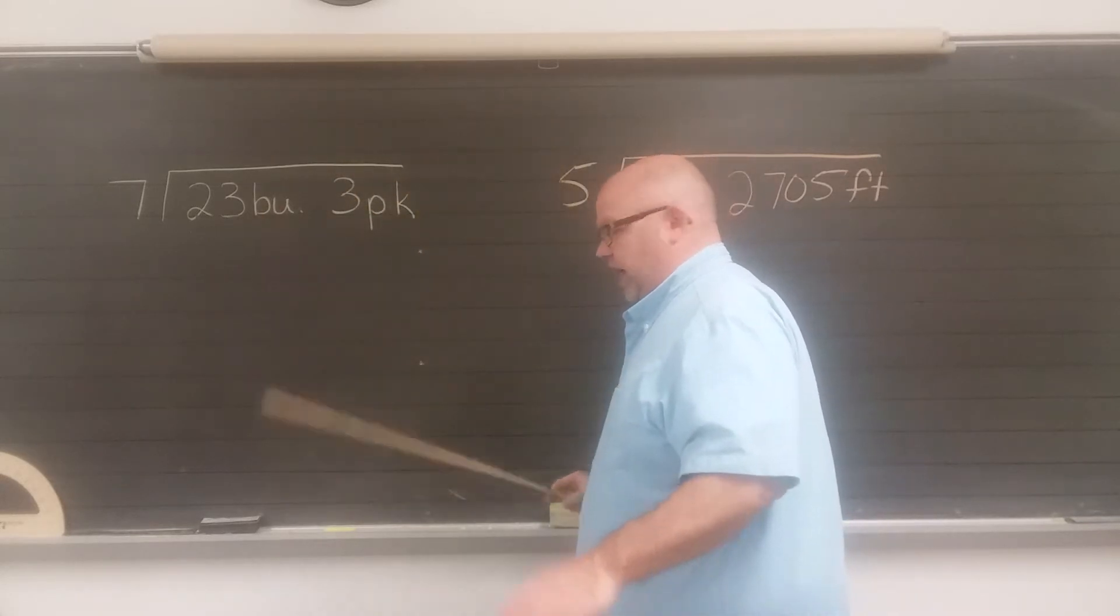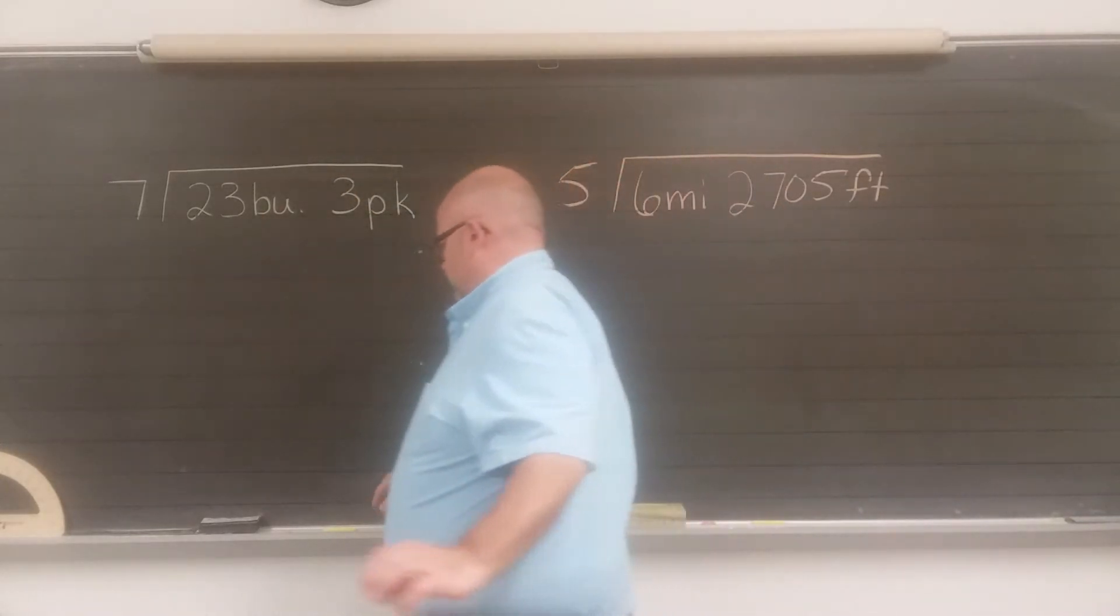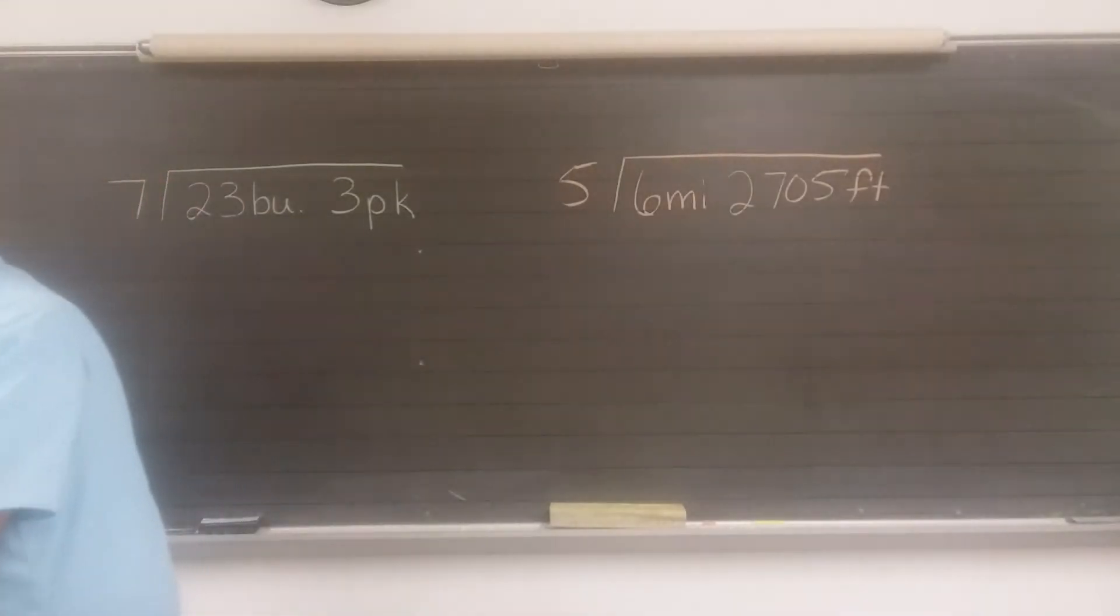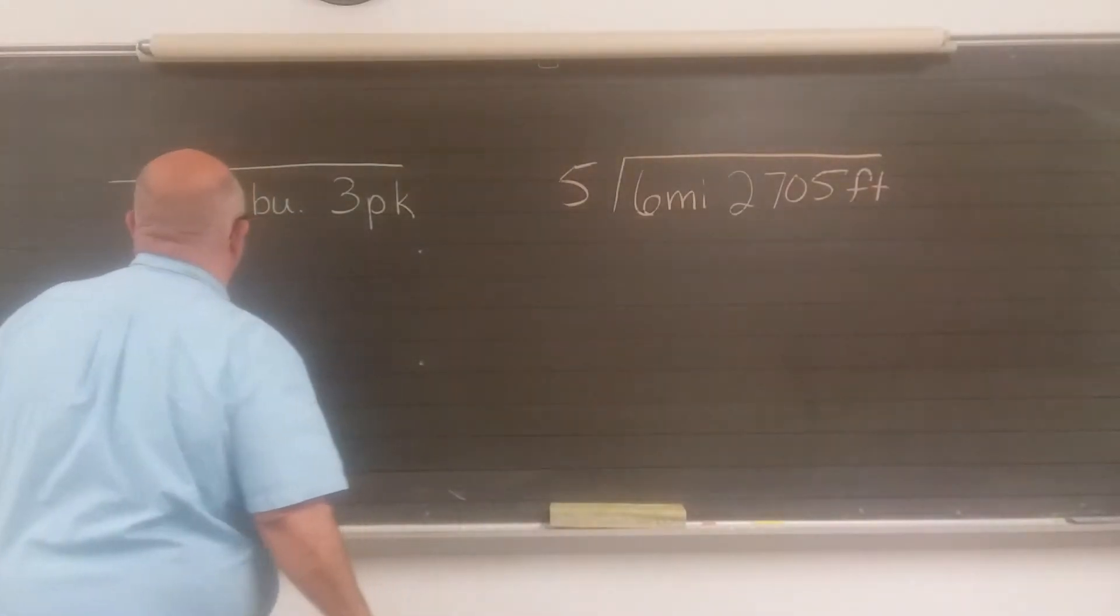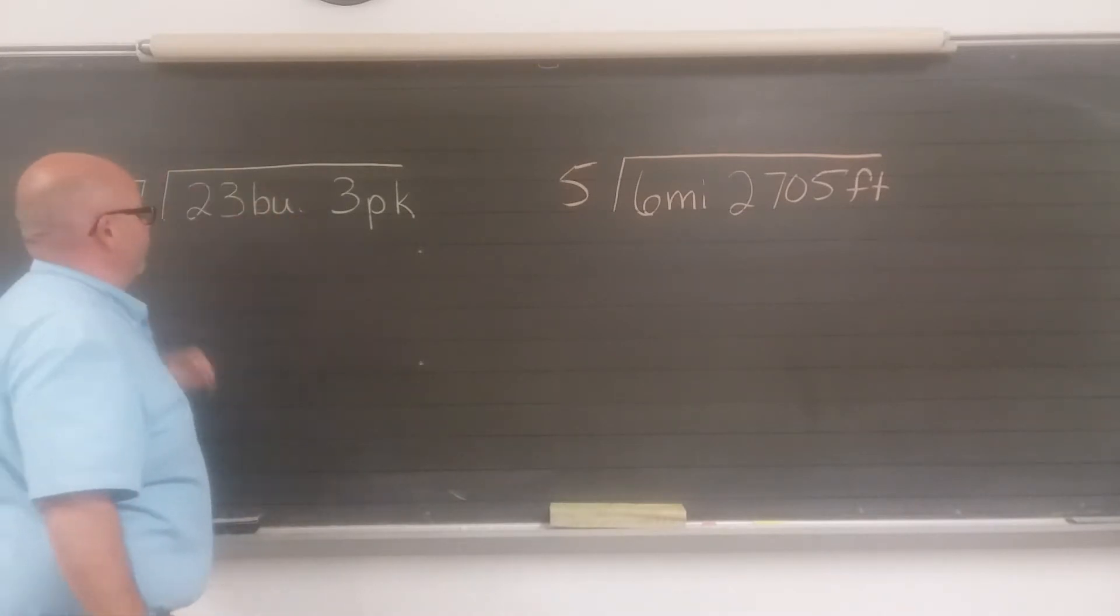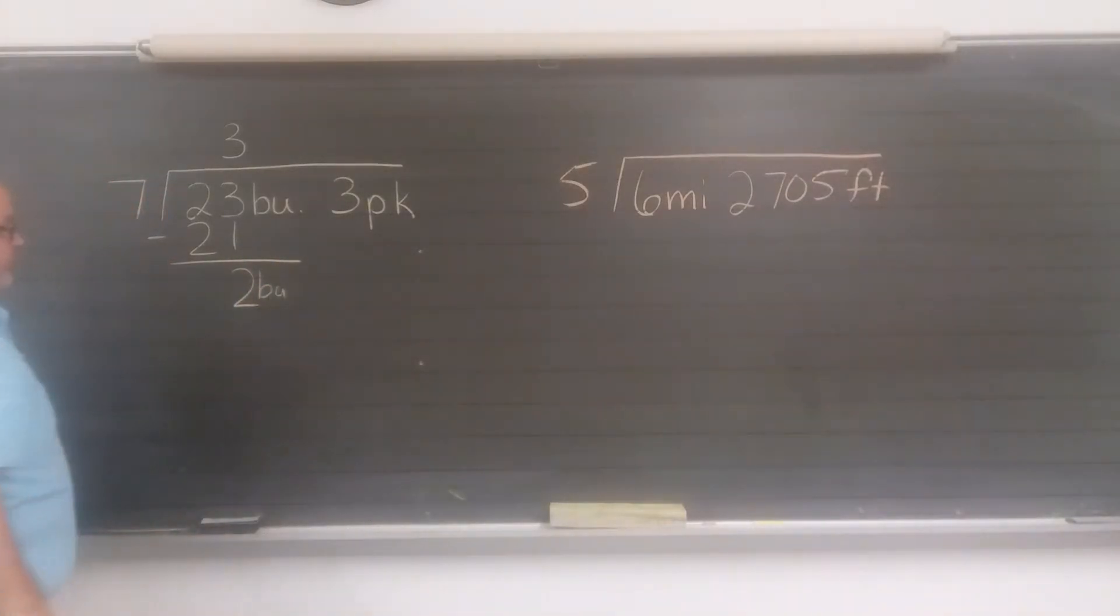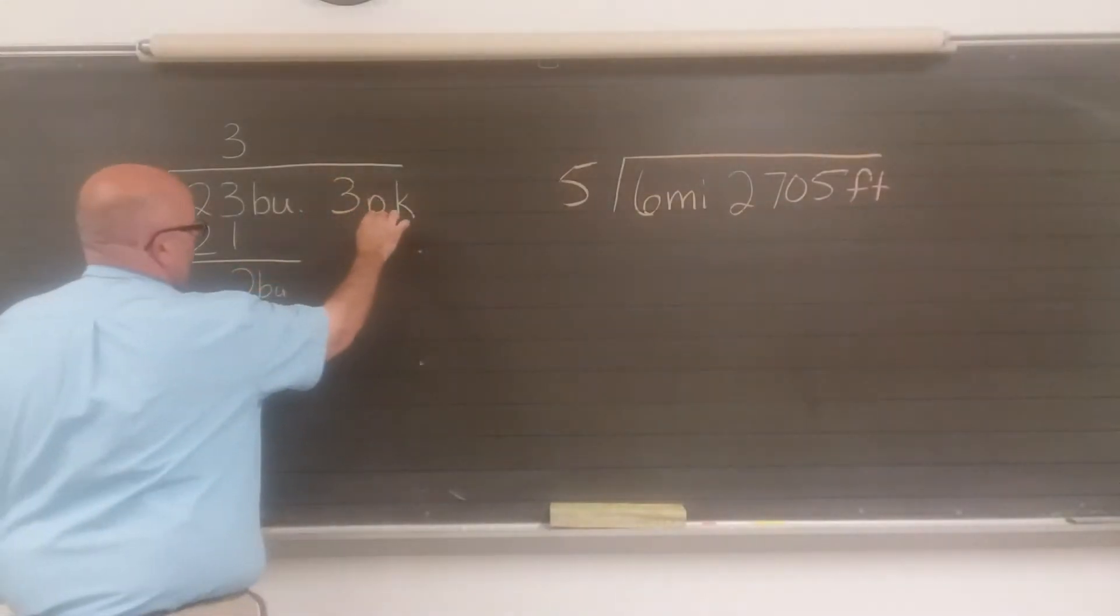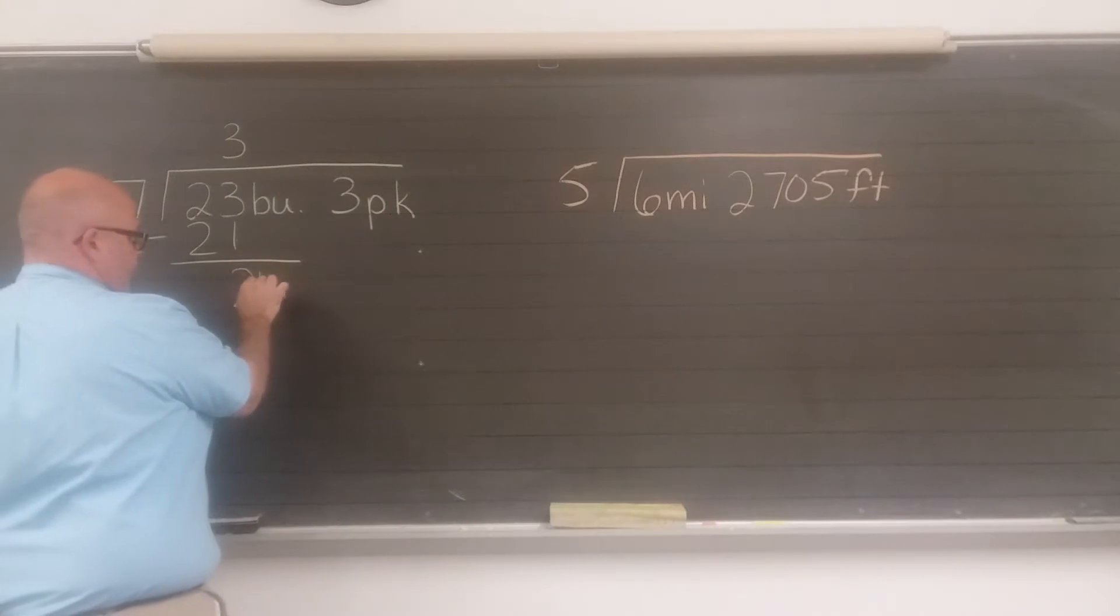So 23 bushels, three pecks, that's your compound measure, two labels. 23 bushels, three pecks, divided by seven. Start out by dividing the bushels by itself. Seven into 23 goes how many times? Three times. Three times seven, 21. Subtract. Three minus one is two. You have two bushels left.